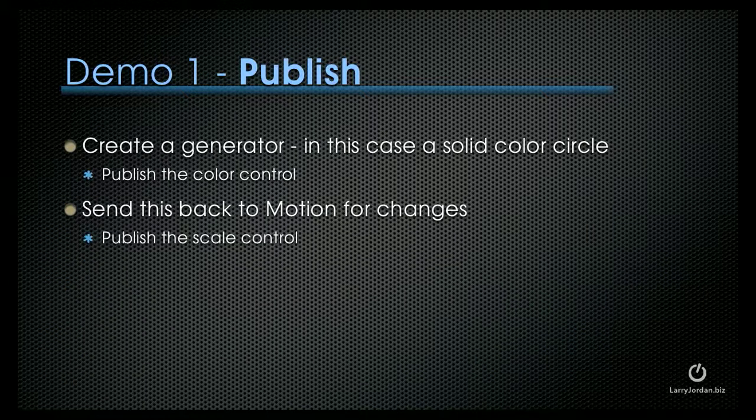So let's start with a demo and show you what publishing is. I'm going to create a generator — in this case it'll be a solid color circle. Then I'll publish the color control and show you how this works inside Final Cut. Then we'll send this back to Motion and make changes, add another control, and publish the scale control.